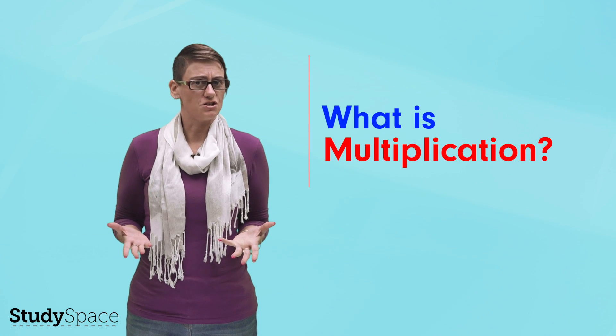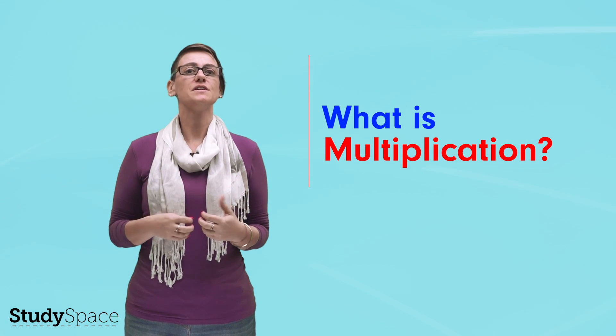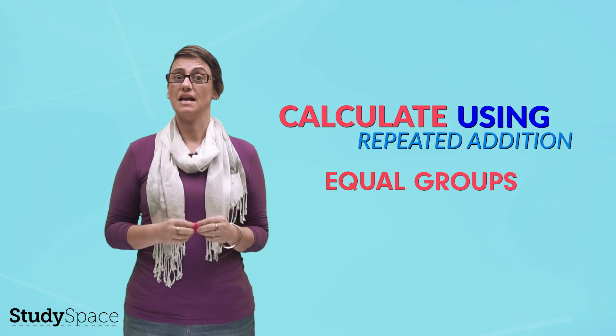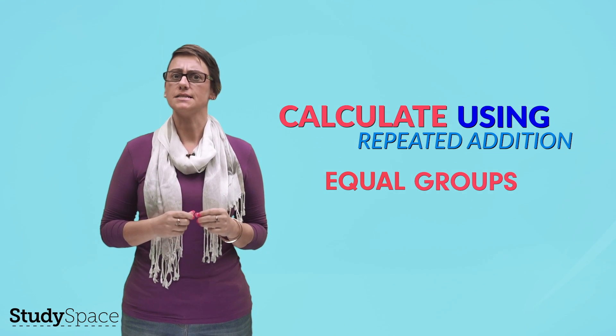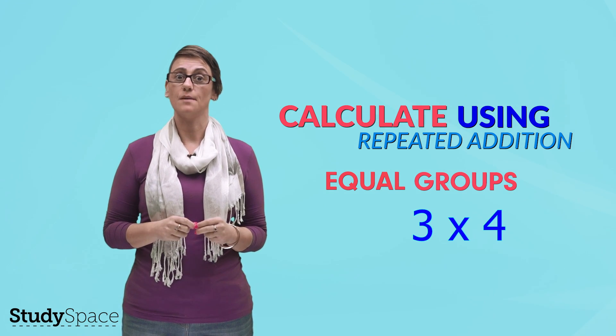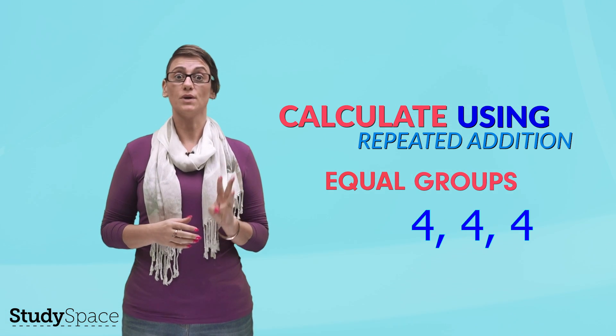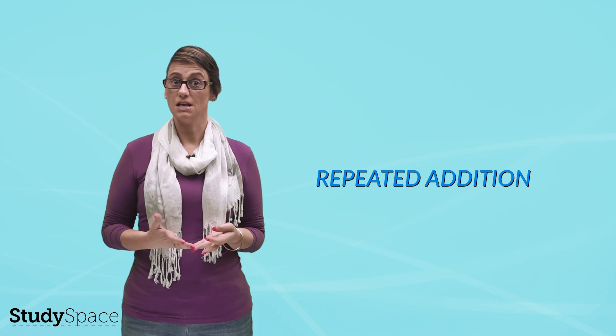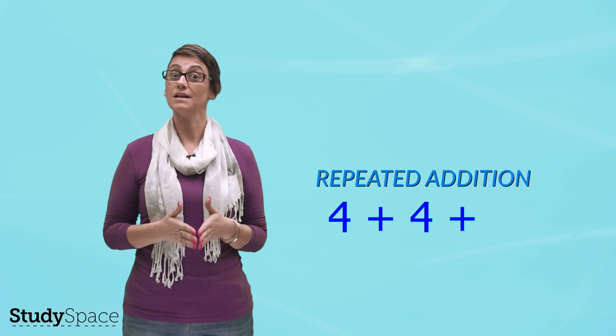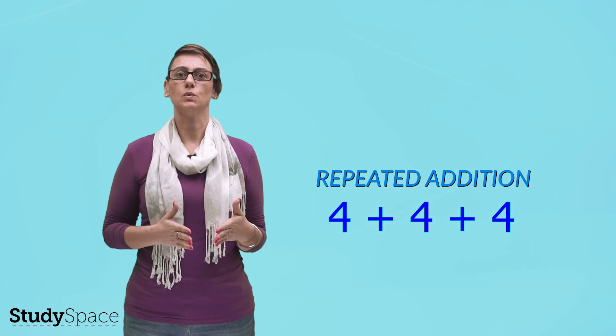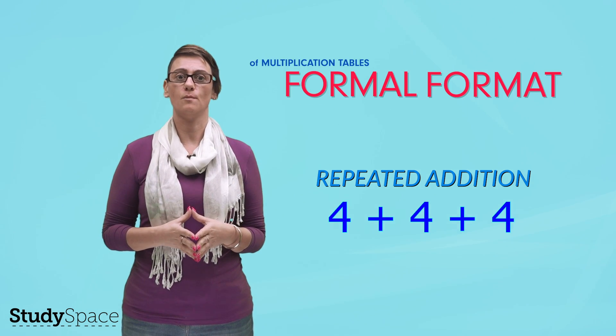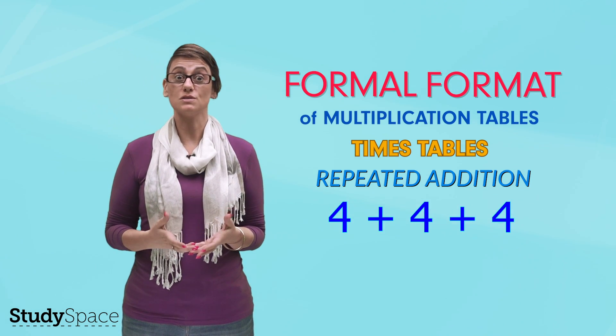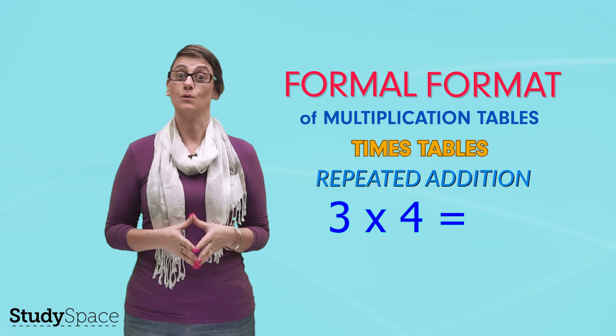So what is multiplication? When we first see multiplication it's as equal groups by which we calculate using repeated addition. An example of this is 3 times 4 can be seen as three groups with four in them. Calculating this with repeated addition is 4 plus 4 plus 4. As we move through school it becomes the more formal format of multiplication tables or times tables, which looks like 3 times 4 equals 12.